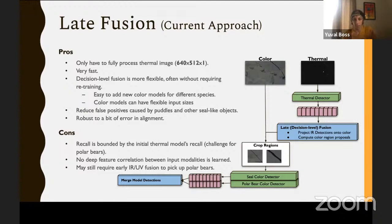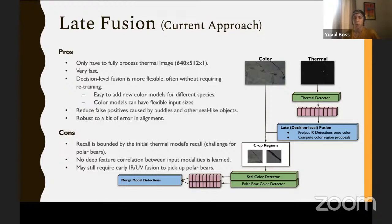The downsides of this approach: recall is bounded by the initial thermal model's recall — if the thermal model doesn't find the animal, the color model won't either since we won't look at that region. There's no deep feature correlation between color and thermal features. We're also adding ultraviolet because the polar bear signature in thermal is not great and very different from seal signatures. We'll likely do some sort of thermal-UV early fusion, looking at both initially and then deciding what to do in the color image.